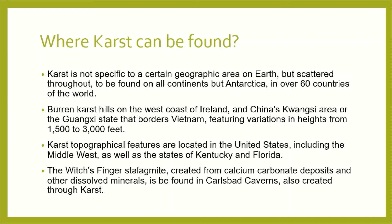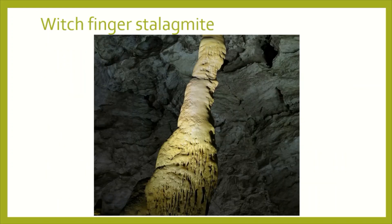Now we are going to discuss where karst can be found. Karst is not specific to a certain geographic area on Earth but is scattered throughout over 60 countries of the world. China and Vietnam show these features very abundantly. Karst topographical features are also located in the United States. Karst stalactites created from calcium carbonate are also a famous karst feature.